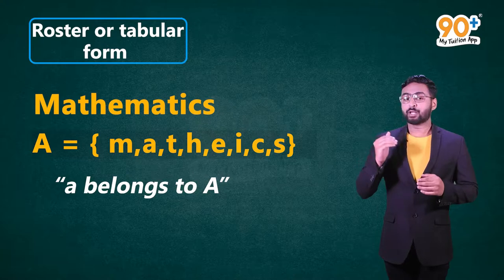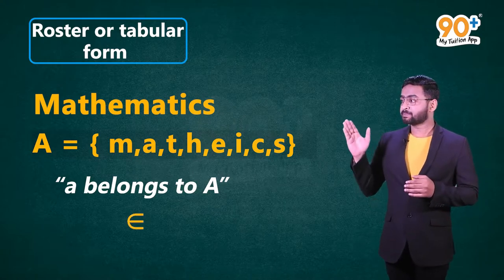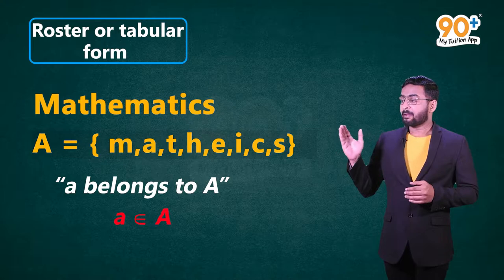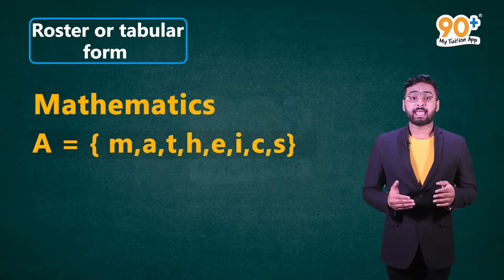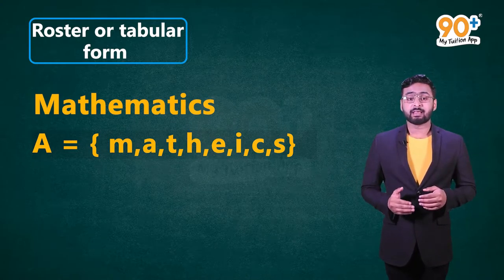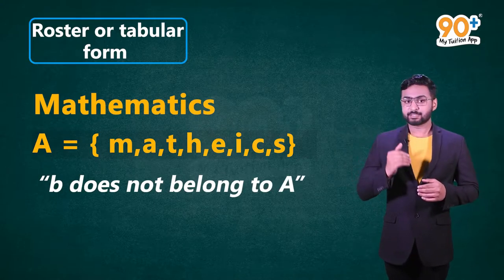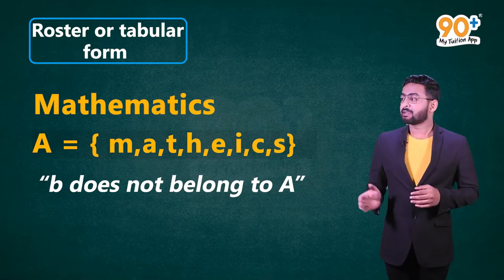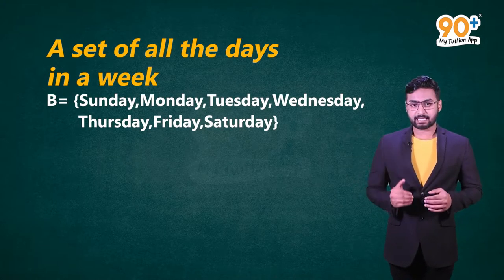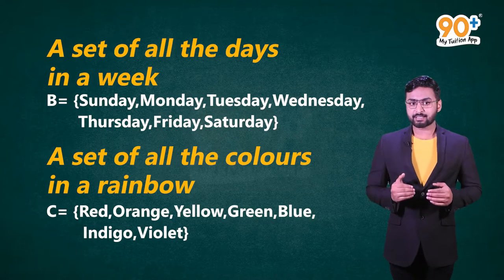We can say A belongs to A. The Greek symbol epsilon is used to denote the phrase 'belongs to.' Thus, we can write A ∈ A. Is B an element of set A? We can see that B is not an element. Hence, B does not belong to A. Similarly, we can form a set of all the days in a week, a set of all the colors in a rainbow, etc. We have also come across sets in our previous classes — it's just that at that time we didn't know they were sets.